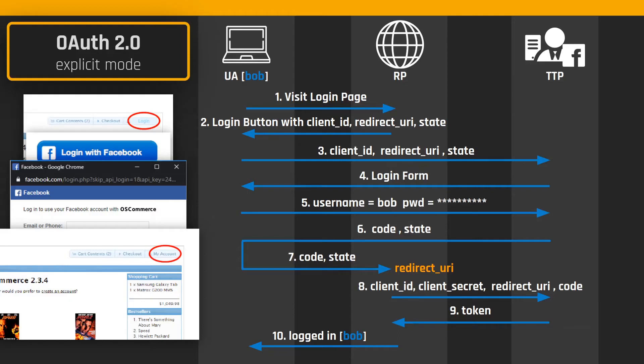The security implementation of these protocols is far from easy. I highlighted here two invariant relations between the parameters used during the protocol run. The state parameter sent at step 7 needs to be the same as the one generated at step 2. The authorization code and the redirect URI sent at step 8 need to equal the values that these parameters had at steps 6 and 3.